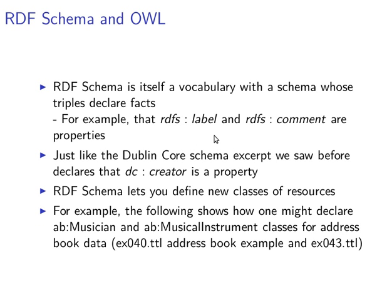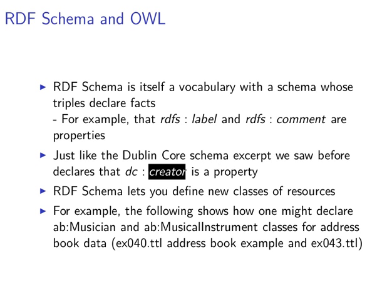We want to remind ourselves that RDF Schema is itself a vocabulary whose triples declare facts. In RDFS, we have a property called 'label' and a property called 'comment.' So RDF Schema is itself a vocabulary with properties like label and comment, similar to how the Dublin Core schema has a property like 'creator.' The RDF Schema itself has labels and comments just like Dublin Core has the creator property.